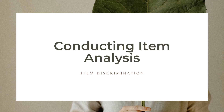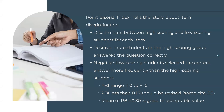Item discrimination is an important component of conducting an item analysis, and it can be tricky. Remember that the Point Biserial Index — the PBI — really tells the story about how items discriminate between high-performing and low-performing students. It can be a positive or negative number. A positive number indicates that more students in the high-scoring group answered the question correctly. A negative number indicates that low-scoring students selected the correct answer more frequently than high-scoring students — a red flag to investigate further.